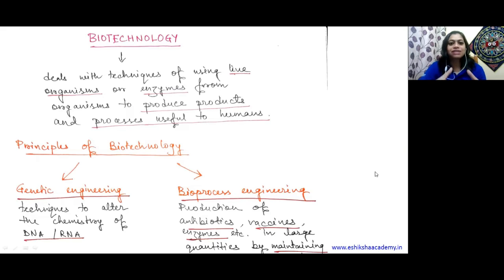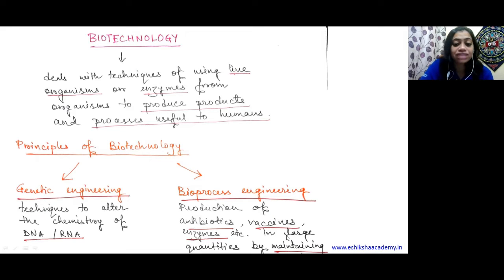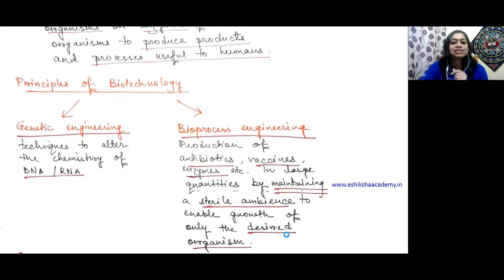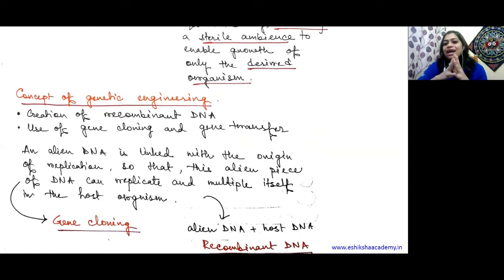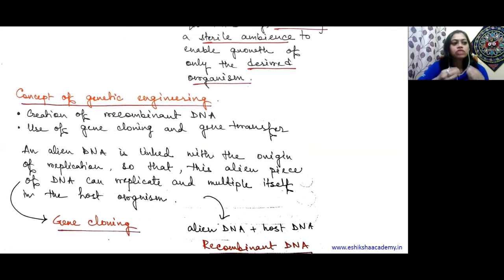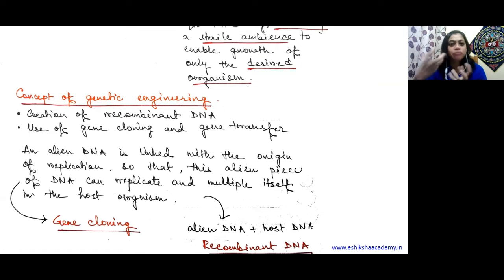To produce a large-scale product - suppose we need to produce an enzyme or a vaccine - the particular organism from which we extract the product must also be grown in large quantities. To grow it, we must maintain a sterile ambience to enable growth of only the desired organism.